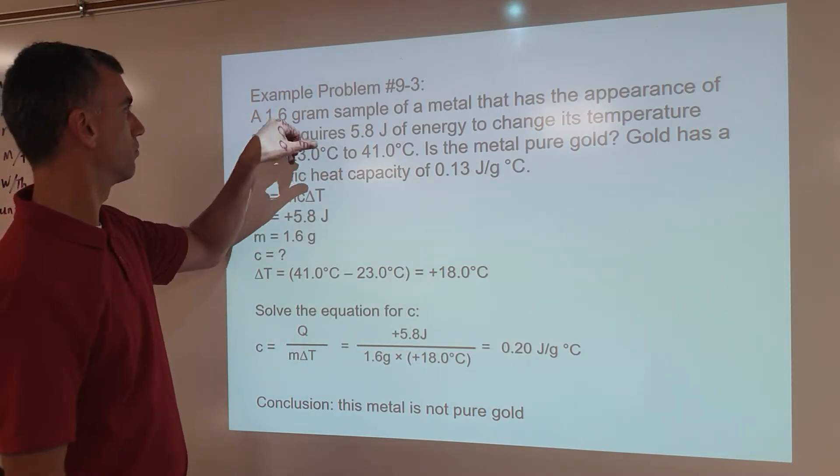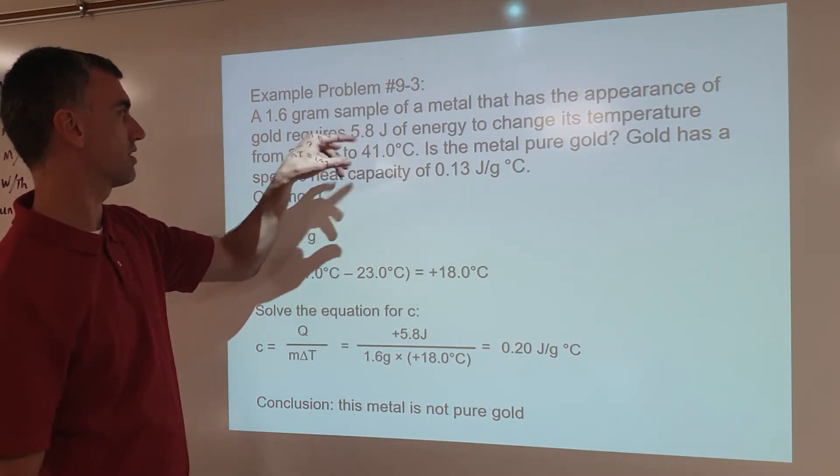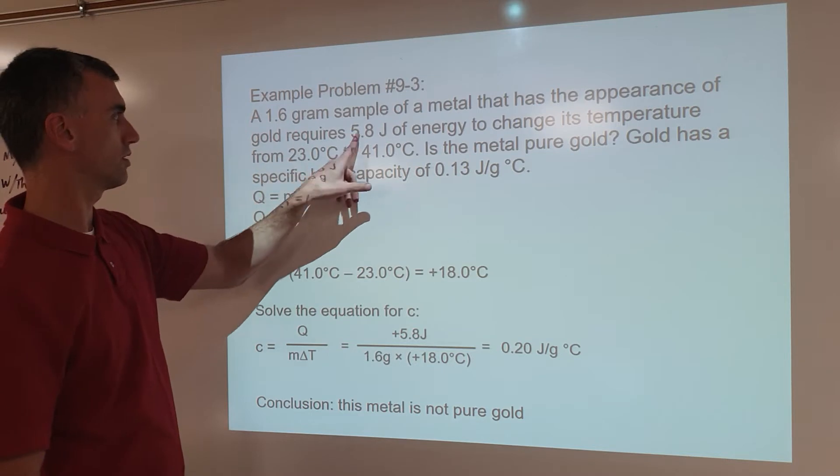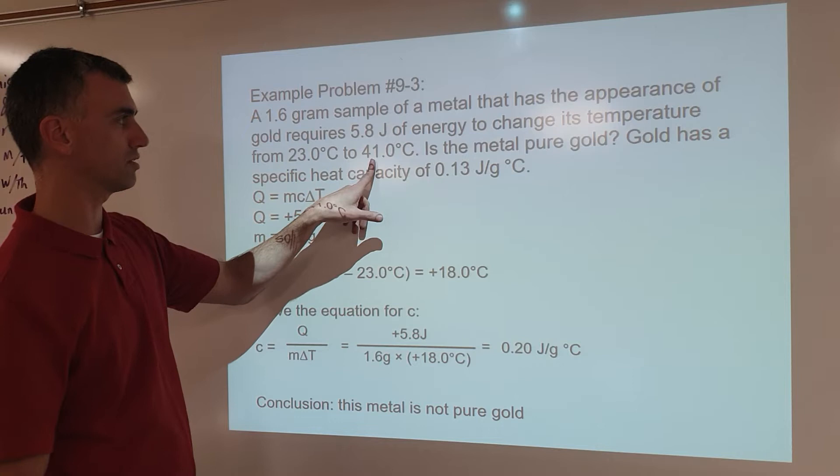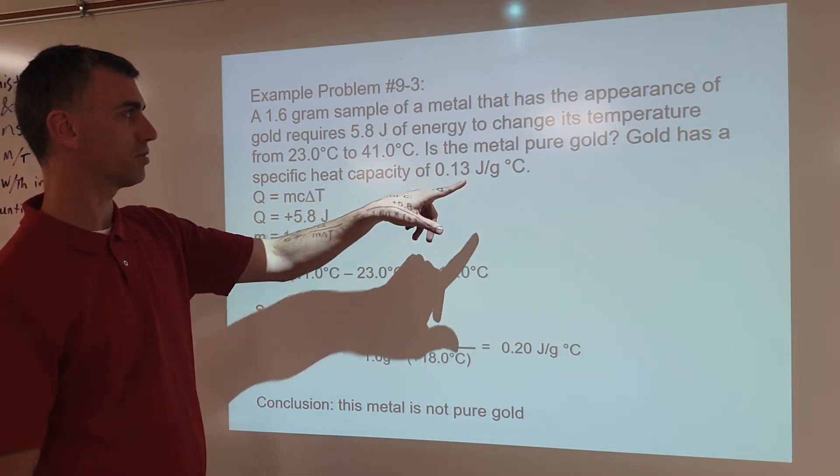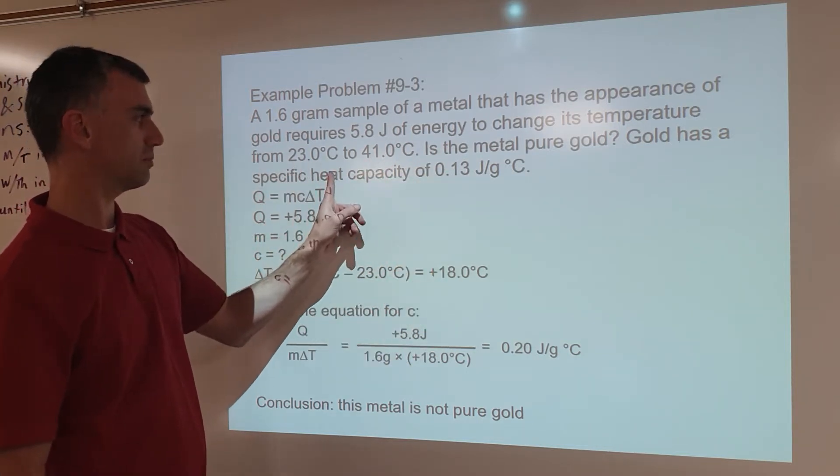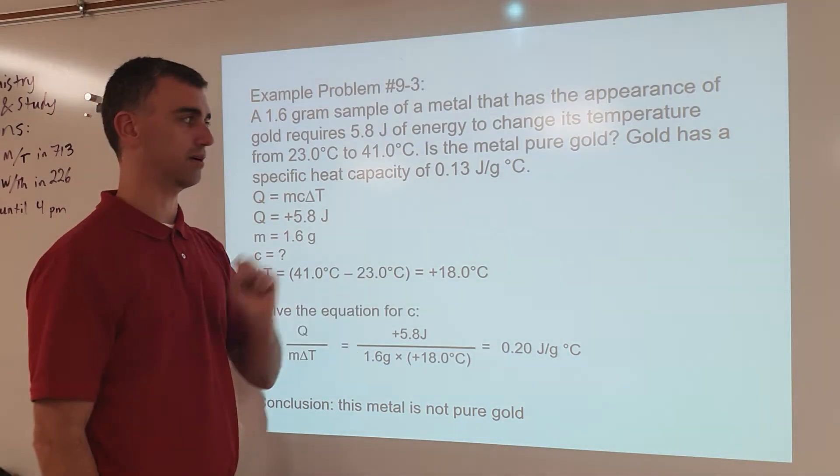And how do you know it's asking you to solve the specific heat capacity? So look at this. A 1.6 gram sample of metal that has the appearance of gold requires 5.8 joules of energy to change its temperature from 23.0°C to 41.0°C. Is the metal pure gold? Gold has a specific heat capacity of 0.13 J/g°C.